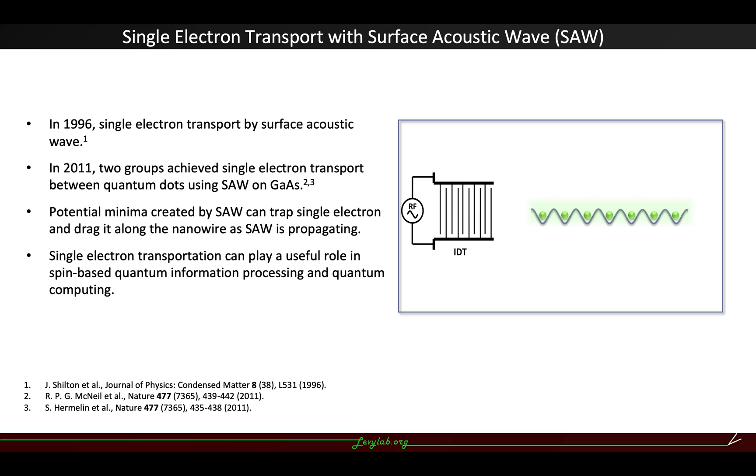With the piezoelectric property of the material, surface acoustic wave can cause such potential minima. Each of these potential minima can carry a certain number of electrons and drag it along the wire as the surface acoustic wave is propagating.